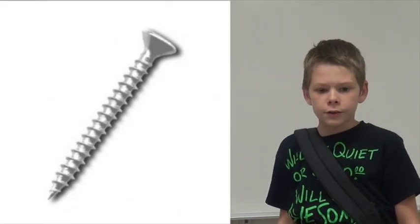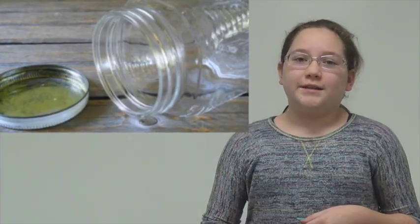Inclined planes that are wedges are knife blades and nails. Inclined planes wound around a cylinder or post are called screws. Screws can be found in bolts and jar lids.